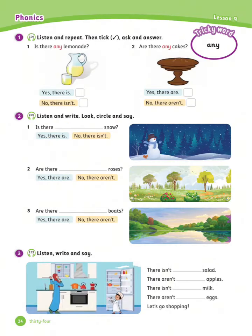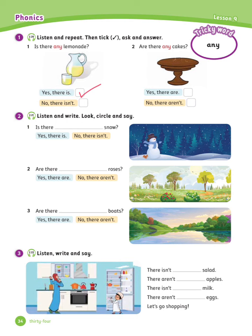Lesson 9 — Phonics. In this page, we're going to learn more about the word 'any'. Exercise number 1: Listen and repeat, then tick. Ask and answer. Listen carefully. Number 1: Is there any lemonade? Yes, there is. Number 2: Are there any cake? No, there aren't.